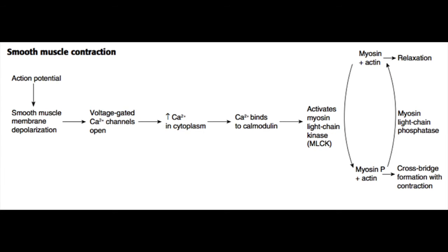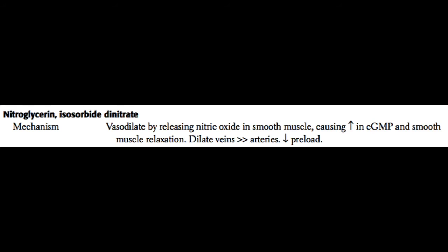This has pharmacologic consequences because certain drugs such as nitrates will actually affect this process. Nitric oxide, for example, is going to increase the activity of an enzyme called guanylate cyclase, which produces cGMP or cyclic GMP. cGMP actually inhibits myosin light chain kinase. So if you have a lot of cGMP around because you've given a patient nitric oxide, you get inhibition of myosin light chain kinase, less phosphorylation of myosin, and less smooth muscle contraction. The muscle will relax, and that's why nitric oxide causes vasodilation.